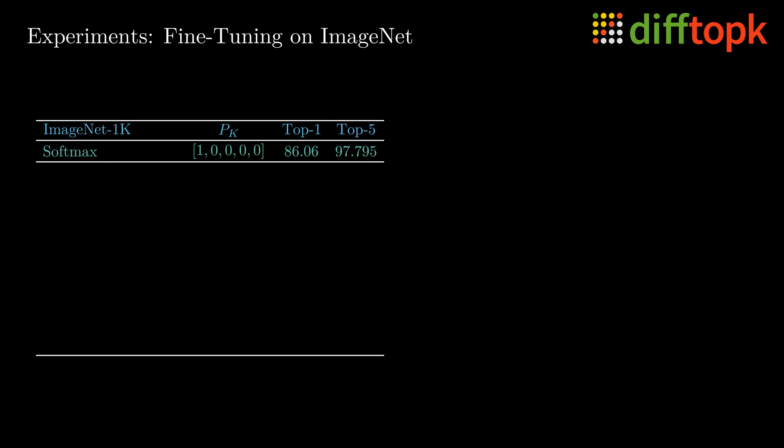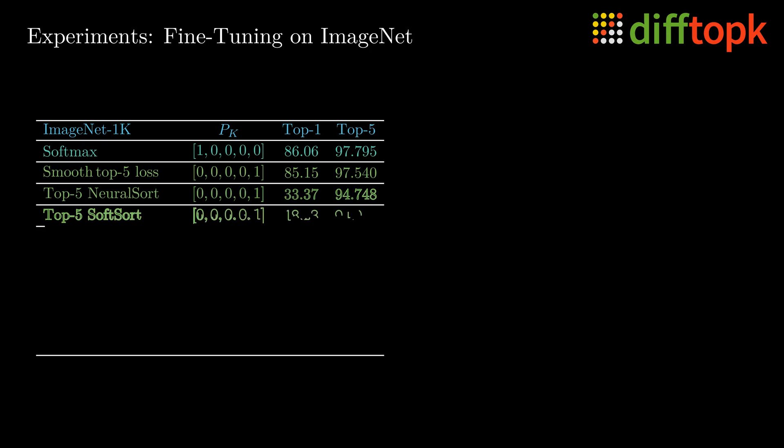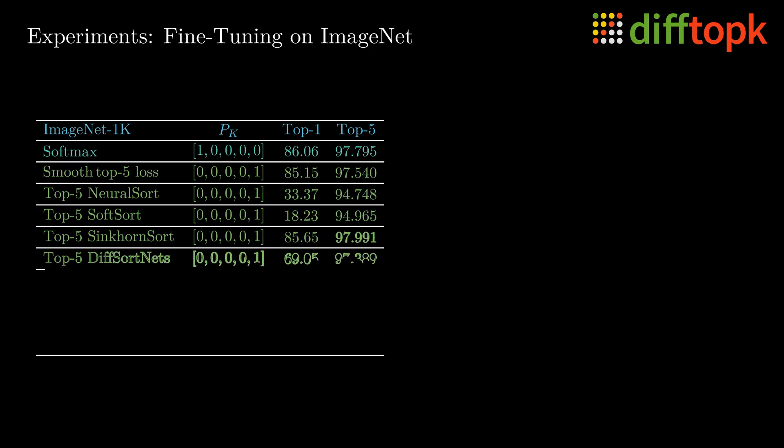Here, we start with an ImageNet fine-tuning task, where we retrain the last layer of a large pretrained network. We start with a simple softmax baseline, which corresponds to a PK where K is always 1, such that only top 1 is possible. Second, we consider the baseline of top 5 training, where K is always 5. Here, we find that the top 5 accuracy improves for some methods, but the top 1 accuracy suffers greatly.